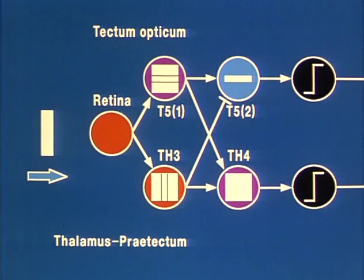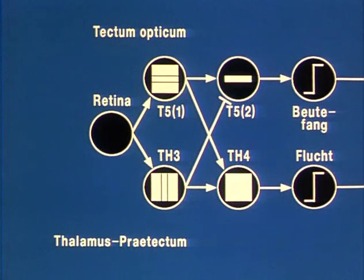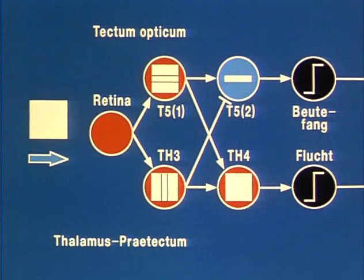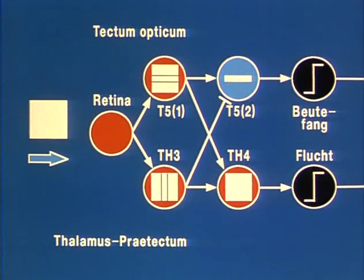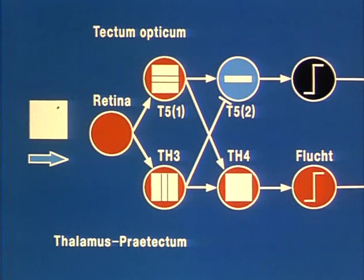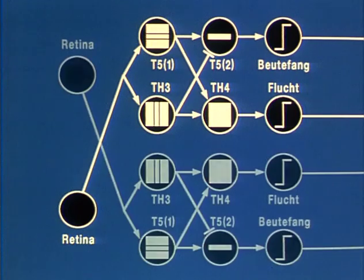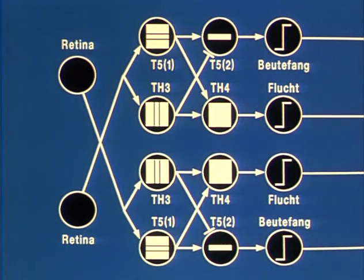The weak excitation in Th4 is not sufficient to activate escape. A large moving square activates T5-1 and Th3 neurons relatively strongly. T5-2 neurons cannot be activated due to the inhibitory influence of Th3. The Th4 neurons, however, are excited strongly by T5-1 and Th3 so that escape is elicited. Such neuronal circuits in connection with each eye are established in each brain hemisphere. They are influenced by systems responsible for motivation, which, however, are not considered in this model.